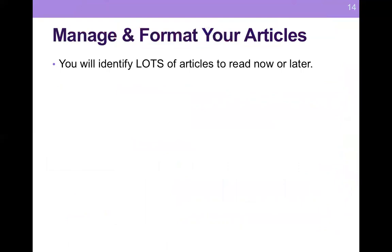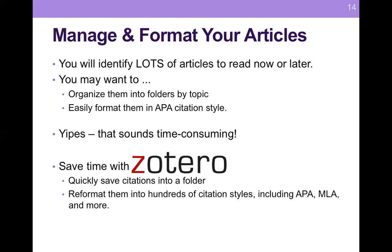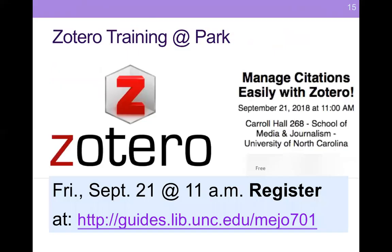One of the things you're going to need to think about is how to manage and format your articles, because you're going to be identifying a lot of articles and may want to organize them in folders by topic. You can do this in EBSCO and format them in APA citation style, but it's very time consuming. There's also a product called Zotero, which is open source, and it lets you quickly save things and reformat your articles into hundreds of different citation styles. We are offering a Zotero workshop in person next Friday, the 21st, in Carroll. Dr. Canelo is a big Zotero user, and I know it would make her happy if you learned about it.